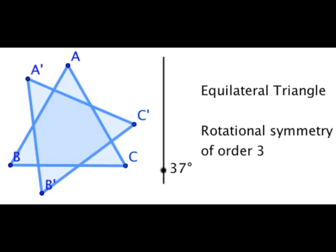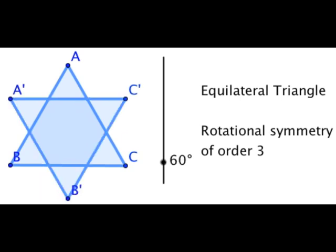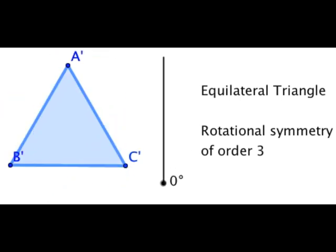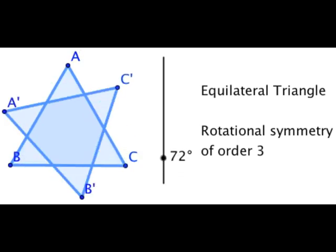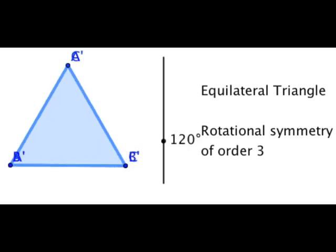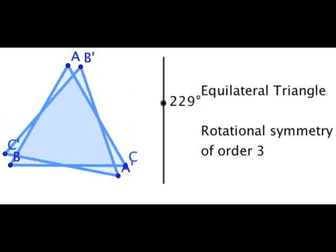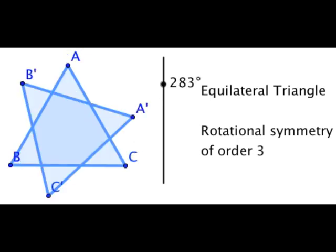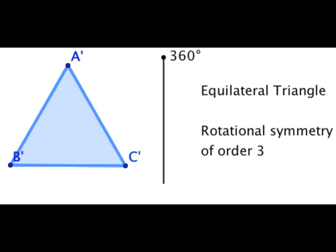Here I have a slider and an equilateral triangle which I can rotate about its centre through one whole turn. With rotational symmetry, we ask: as I rotate the shape through one whole turn, how many times does it look like the original shape? Going one third of a turn, the shape looks like its original. Another third of a turn — looks like its original again. And another third of a turn — looks like its original once more. We've done one whole turn and three times the shape looked like its original, so that's why an equilateral triangle has rotational symmetry of order three.